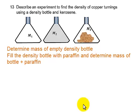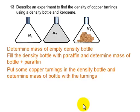In the third step, we put copper turnings in the density bottle and determine the total mass of the density bottle and the copper turnings. From this step, we are able to determine the mass of the copper turnings. M3 is the mass of the copper turnings and the density bottle, while M1 is the mass of the empty density bottle. So by subtracting M1 from M3, we will get the mass of the copper turnings.